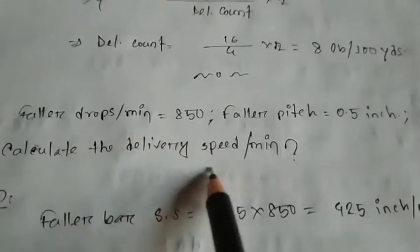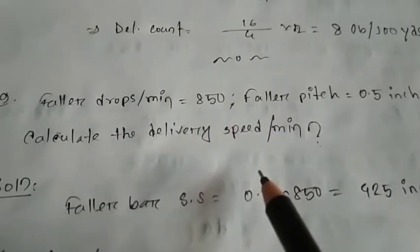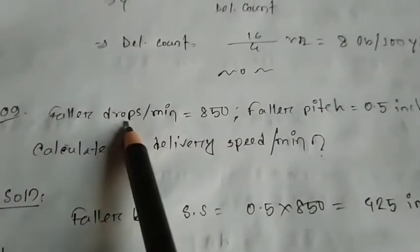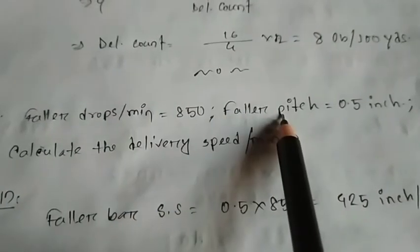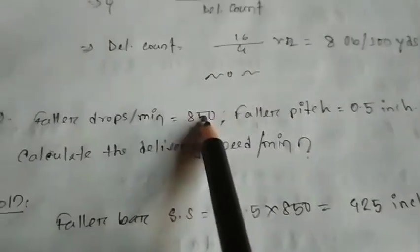Then calculate the delivery speed per minute. Delivery speed is less than a unit. What will you do? Follower drop per minute. Follower surface speed. Follower surface speed is less than a unit.